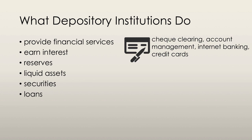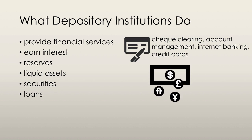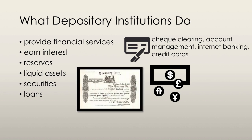A charter bank puts its funds into reserves, liquid assets, securities, and loans. Reserves are notes and coins in the institution's vault or its deposit account at the central bank. Liquid assets include government treasury bills and commercial bills. They can be sold instantly and converted into reserves with a low risk of loss, and thus they have a low rate of interest due to this security.